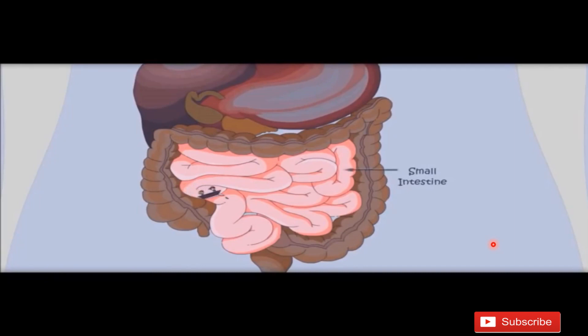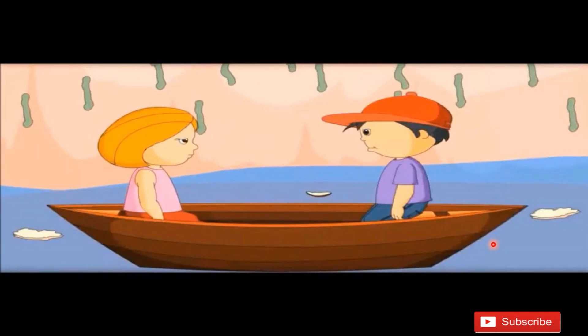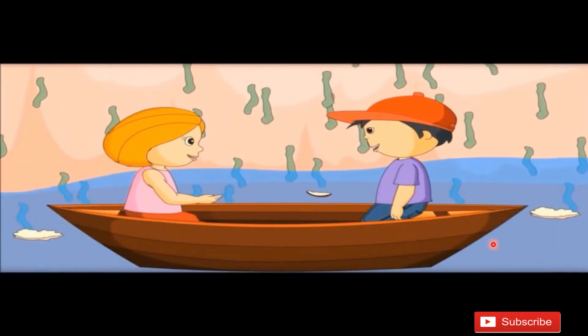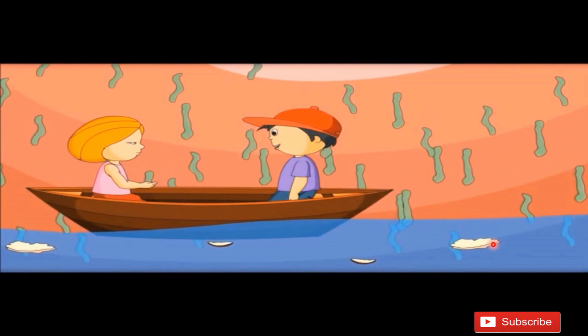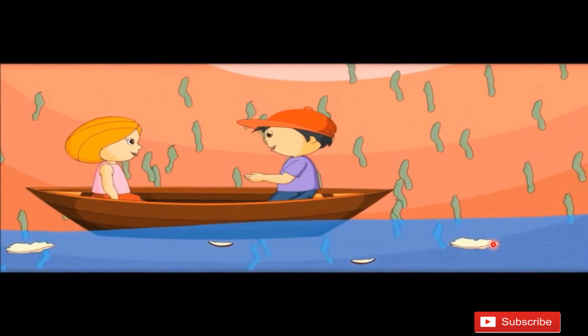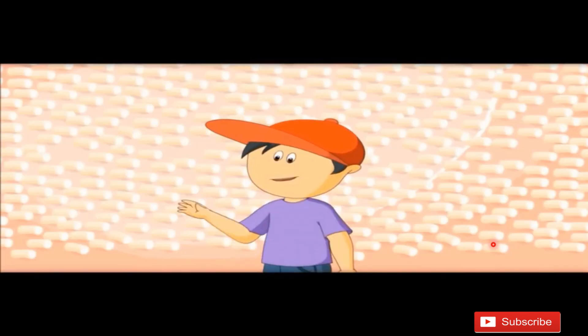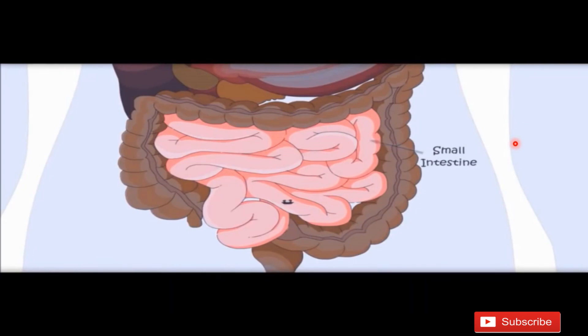In the small intestine, the digestion completes. Most of the digestion happens here. The small intestine is named 'small' because of its narrow diameter, not its length — it is actually the longest part of the alimentary canal. The small intestine receives secretions from the liver (called bile) and from the pancreas (called pancreatic juice). Inside the small intestine you can see finger-like projections called villi, which are used for absorption.